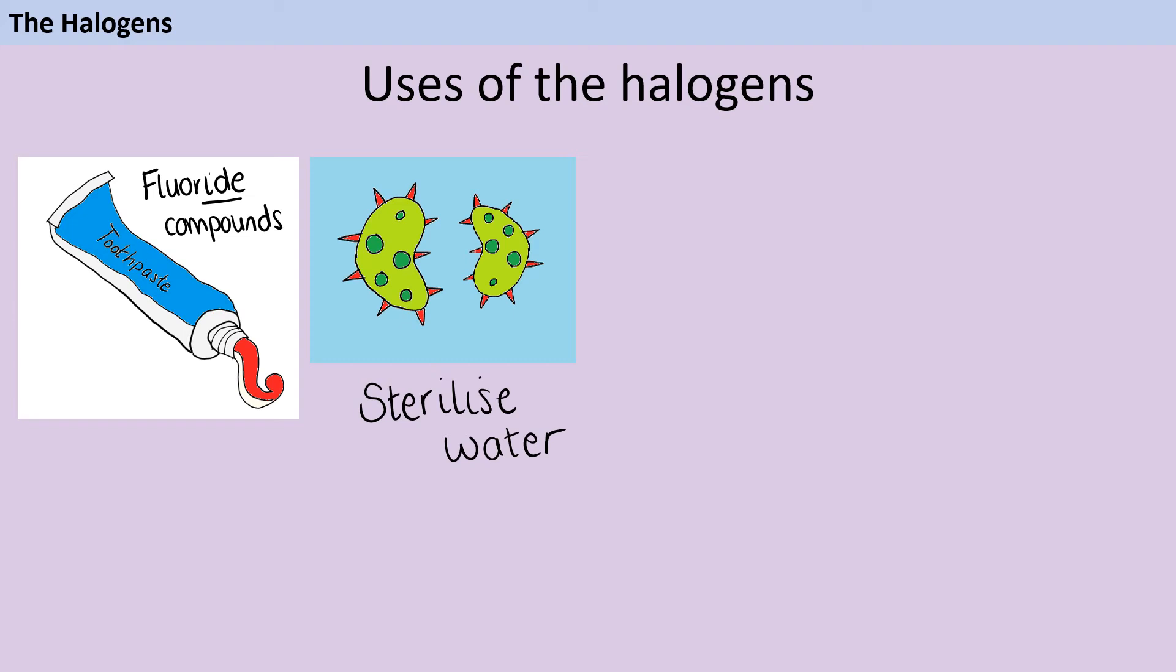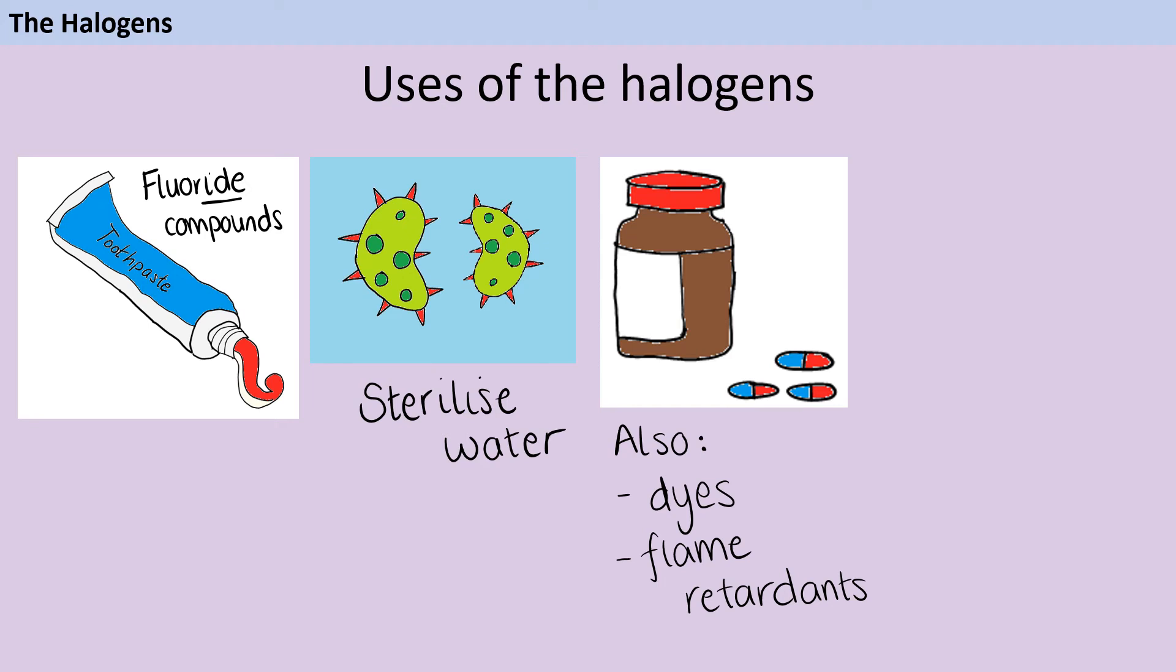Bromine has lots of different uses. It's used in various medicines and drug treatments, but it's also added to dyes and also compounds which help to make fabrics flame-proof.